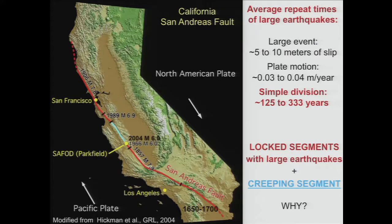Now let's go back to this question. We have these locked segments and this creeping segment — why? We also saw this depth-dependent behavior: locked portions, creeping portions. What is the basis for that?